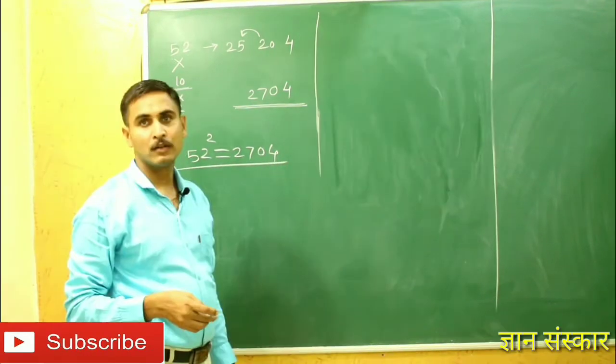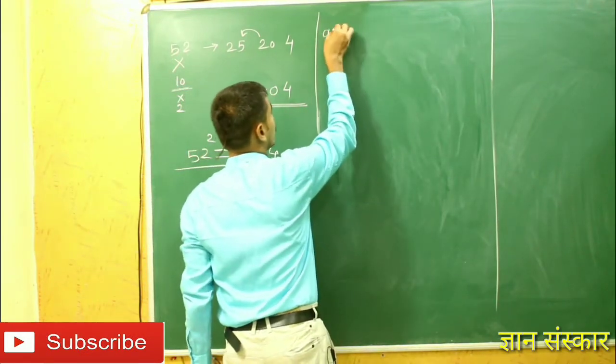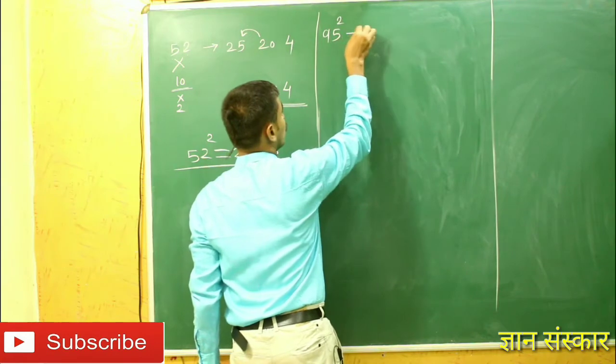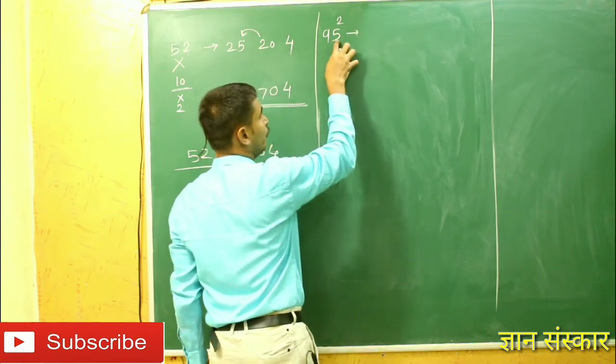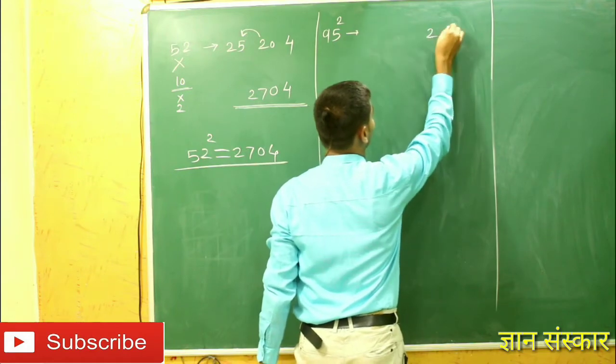Again, we will take another example to find the square of 95. What should be done? The square of the first digit, that is 5, should be written here. The square of 5 is 25. Then we will write the square of 9, that is 81.